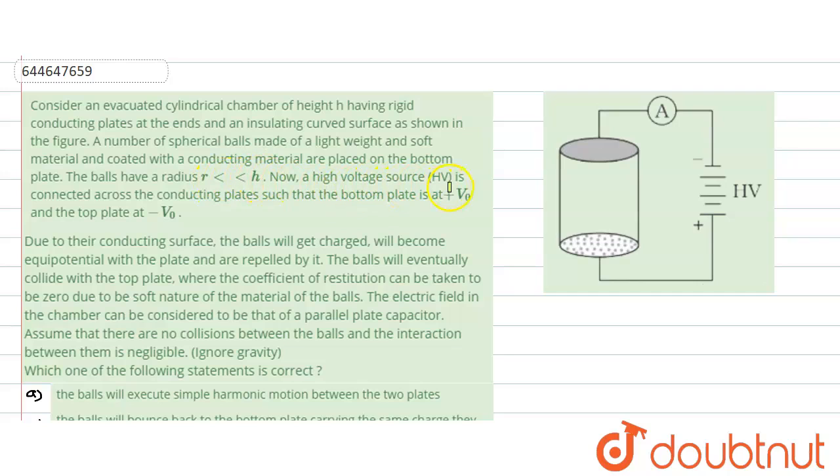Now, H is very very less than R, which is very very less than the height. A high voltage is applied across these two ends between the bottom and the top plate. Due to the conducting nature, the balls get charged and become equipotential with the plate and are being repelled by it.